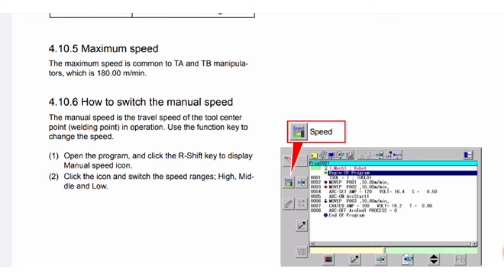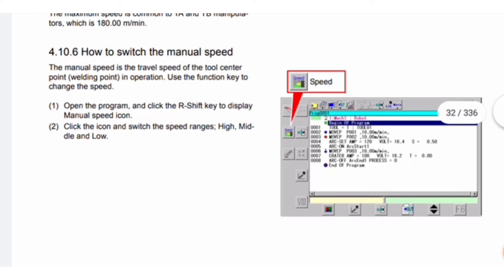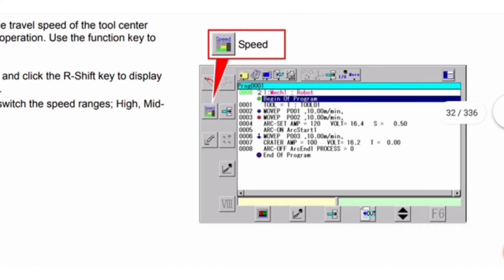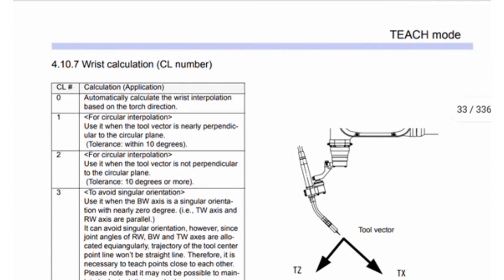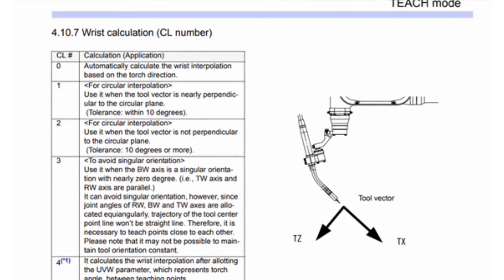To switch the manual speed: the manual speed is the travel speed of the tool center point (welding point) during operation. Open the program and click the R-Shift key to display the manual speed icon. Click the icon to switch between speed ranges: High, Middle, and Low.